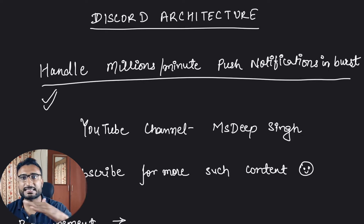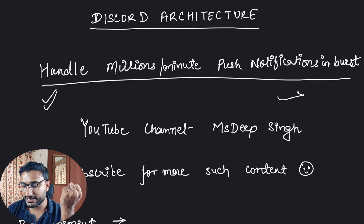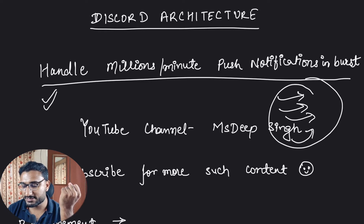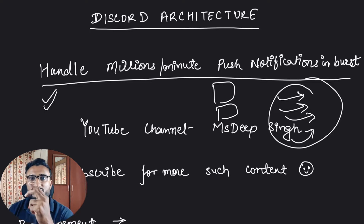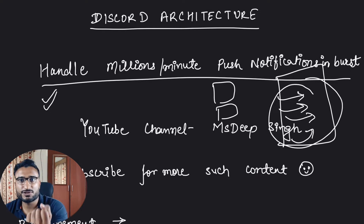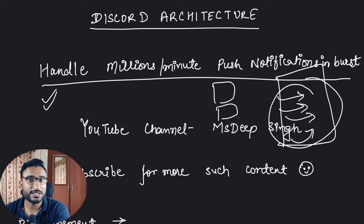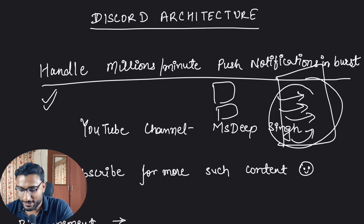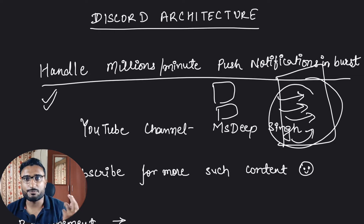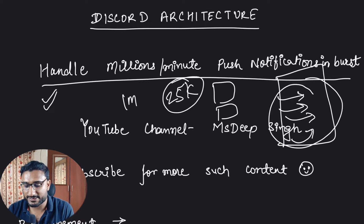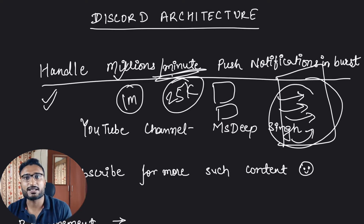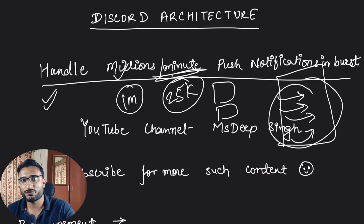As traffic increases, there is a probability that you might have a requirement to push notifications in burst. There are a lot of systems pushing notifications to customers. This notification service — in case you are interested in how to design one, you can check our system design playlist. So what if there are 25,000 or even 1 million messages per minute coming into our system? Will our system be able to handle it? How Discord figured it out — we will be deep diving into that.